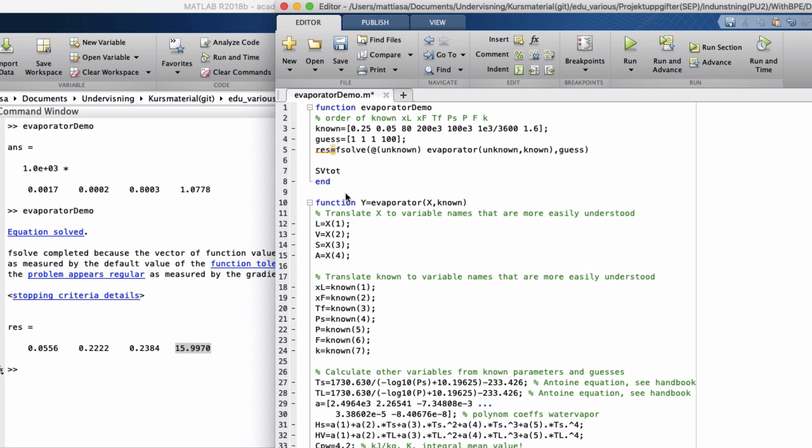Now let us go a bit beyond this task and add the calculation of the specific steam consumption s divided by v. Now s is the third position in the vector res and we only have one vapor flow since we have a single effect evaporator and that is position two in the vector res.